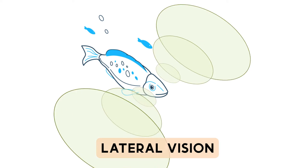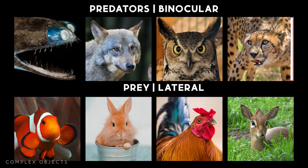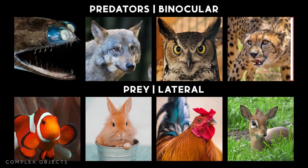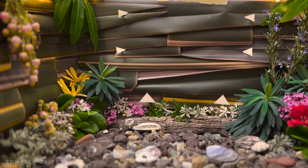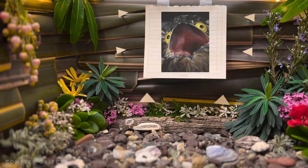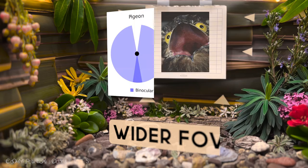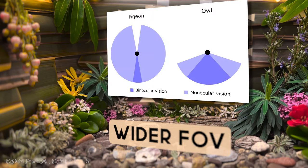In contrast, most fish and prey animals have their eyes pointed laterally, so they're not coordinating both eyes onto one target. This puts them at a disadvantage when it comes to depth perception, but the trade-off is they have a much wider field of view, and that helps detect incoming predators.